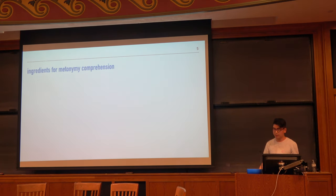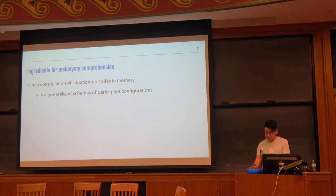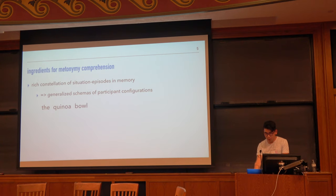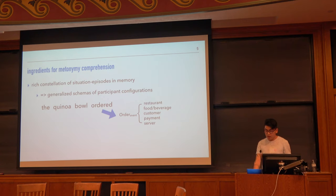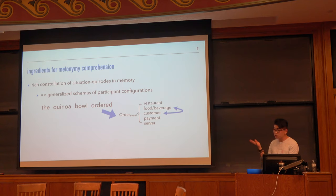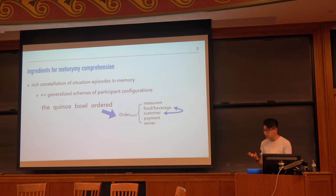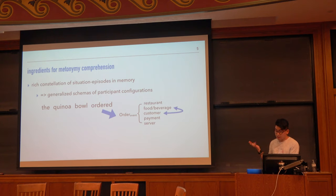In order to successfully do metonymy, we have to have a few things in place. The first we're going to call a rich constellation of situation, episodes, and memory, which give rise to generalized schemas for participant configuration. When you hear something like the quinoa bowl ordered, you're getting the conceptual structure of an ordering event, which might involve a restaurant, a food, a customer, payment, and a server. If you have this schema, you can easily connect the named explicit entity, the quinoa bowl, with the understood implicit entity, the customer. If you've never been in a restaurant, it would be a lot harder to make that conceptual connection.